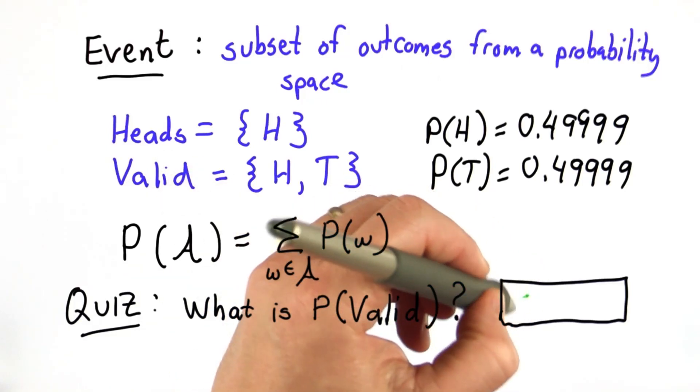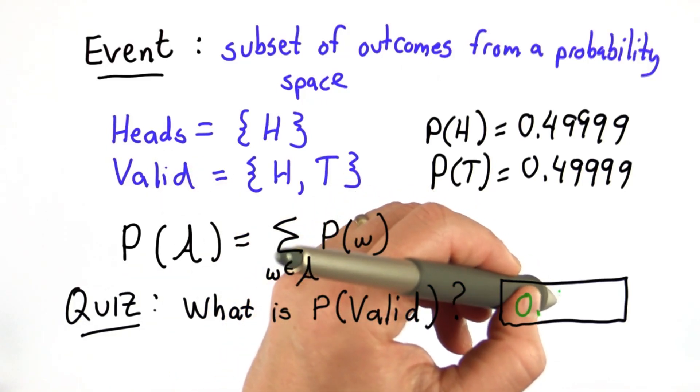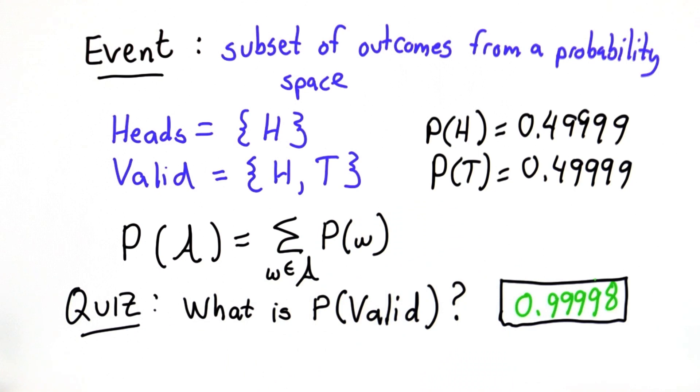So the answer is 0.99998, and there are two ways to solve this. One is to sum these two, not too hard to do.